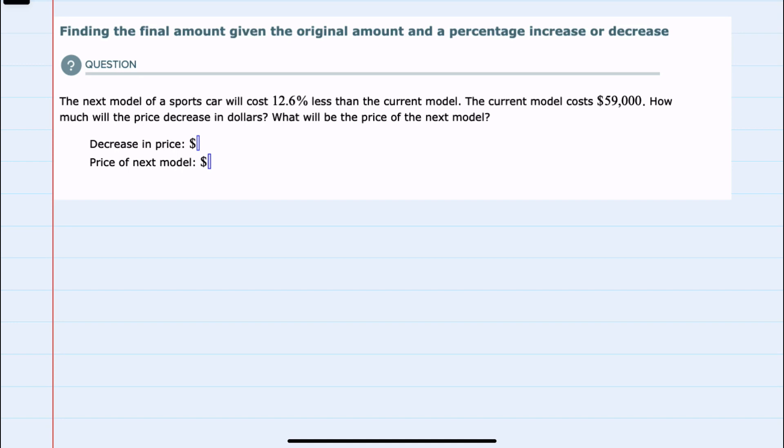We're told that the next model of a sports car will cost 12.6% less than the current model. The current model is $59,000. And we're asked two questions: How much will the price decrease and what will be the price of the next model year? So what will be the new price?